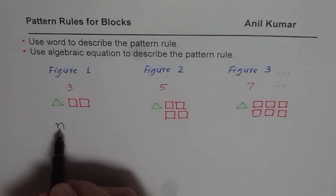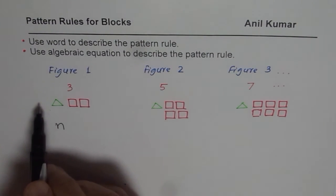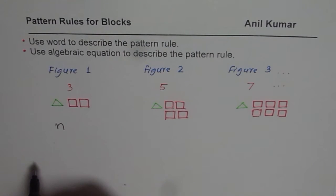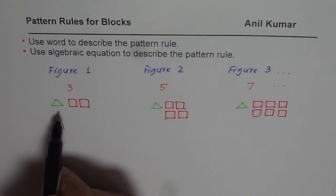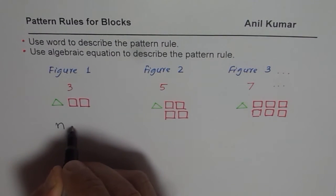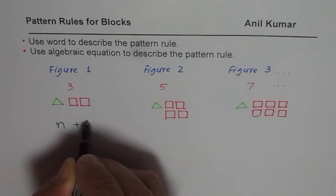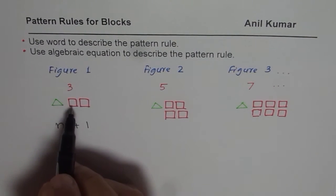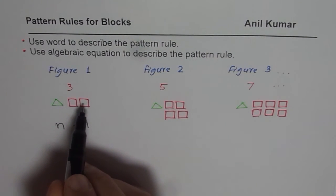We will write in terms of n. So here, how many blocks do we have? What we see is, one is fixed. So if one is fixed, I will write one first. Let me write one. And then how many are variable? How many are changing?